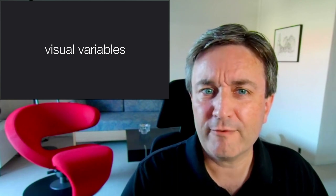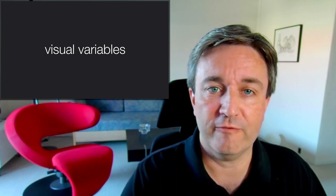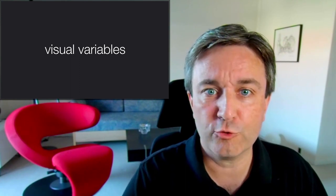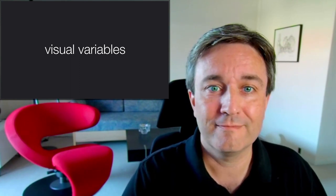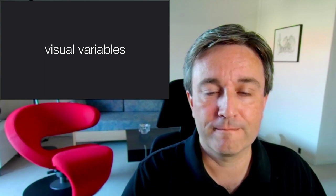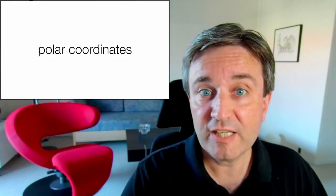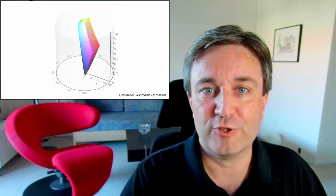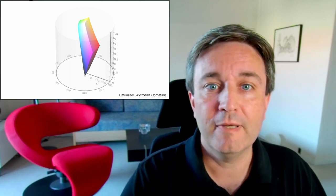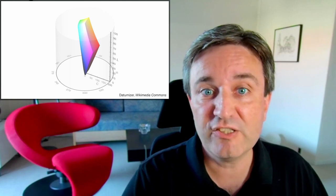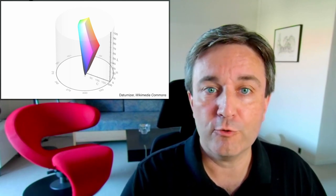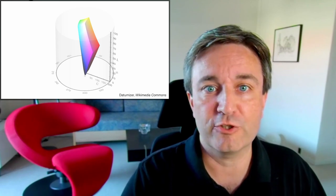However, we still have the problem that these are not visual variables. Well, L star is. But A star and B star, red to green, blue to yellow, they are not visual variables. However, it's easy to put this into polar coordinates. And when we do that, we get this representation. The shape is still the same. We've just replaced the A star and B star coordinates with hue and a variable closely related to chroma that we discussed before.